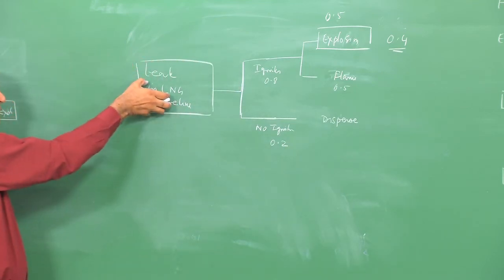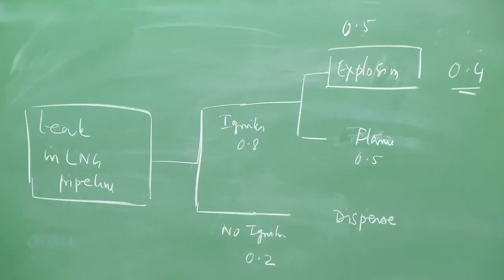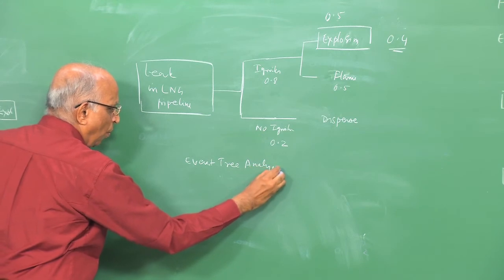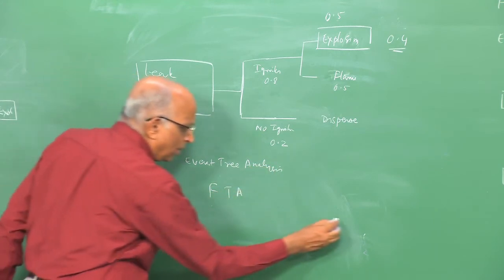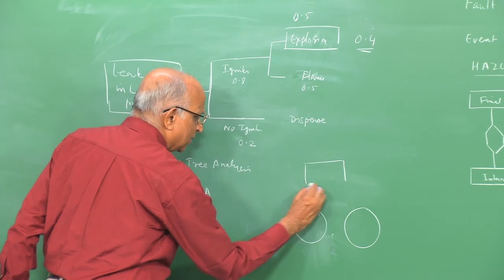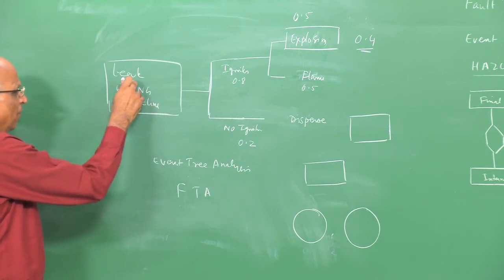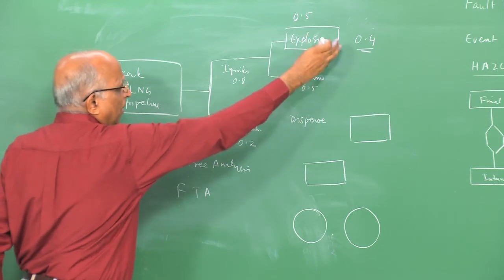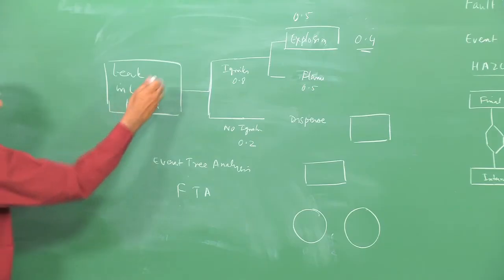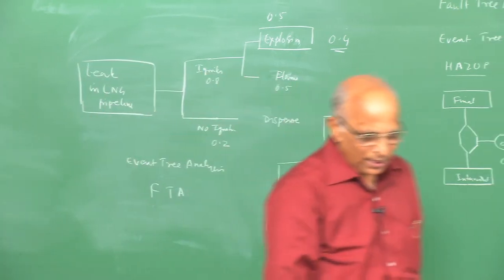In the event tree, all events are shown by rectangles and probabilities are multiplied along the paths until we reach the final event. In the fault tree, basic events are denoted by circles, intermediate events by rectangles, and the final event by a rectangle. Let me take a more illustrative example with more links in the event tree, shown on the slide.